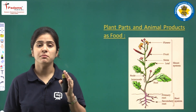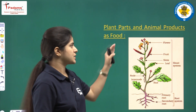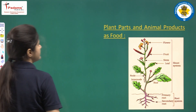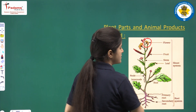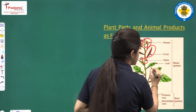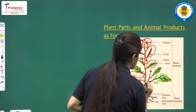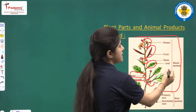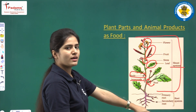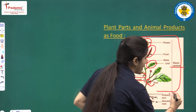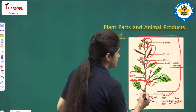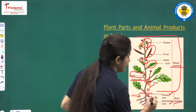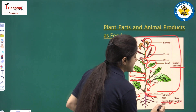Now we are discussing plant parts and animal products as food. Here is a picture of a plant. This is the flower, this is the fruit, this is the stem, this is the leaf, this is the node, internode, and this is the bud system. The whole system of the plant above ground is called the shoot system. The root system consists of primary root and secondary root. The root connects the aerial portion of the plant with the soil portion.